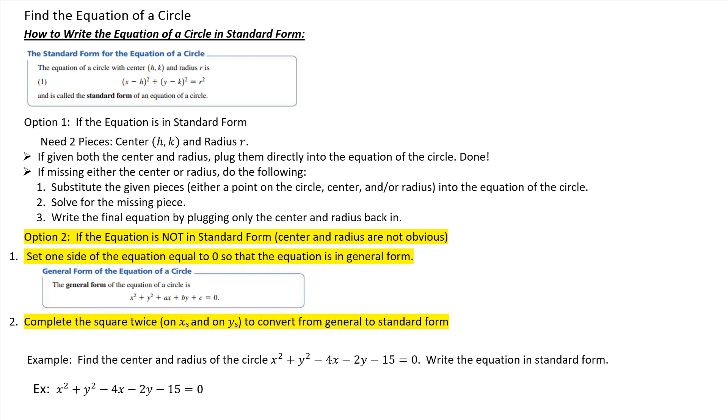That is how you get it in standard form, and from there, once it's in standard form, the center and the radius should be obvious. So this example says find the center and radius of the circle x squared plus y squared minus 4x minus 2y minus 15 equals 0.